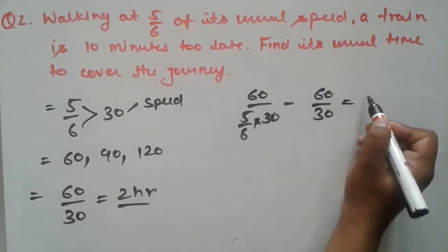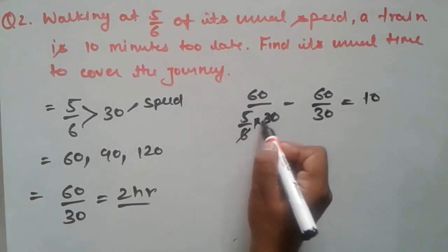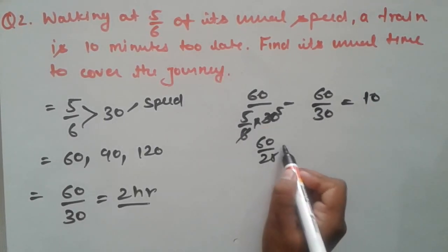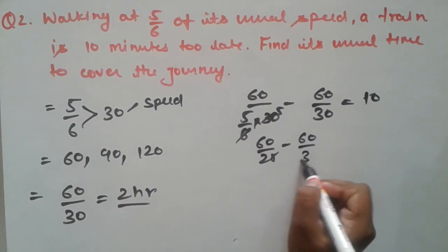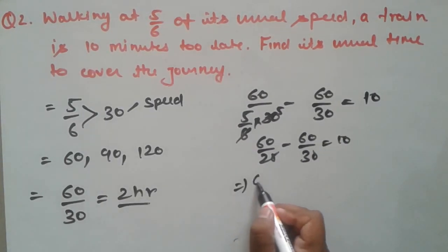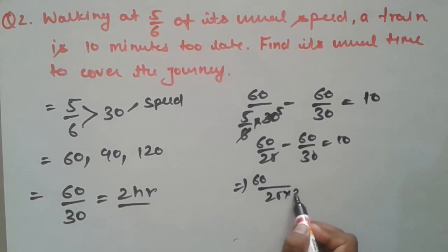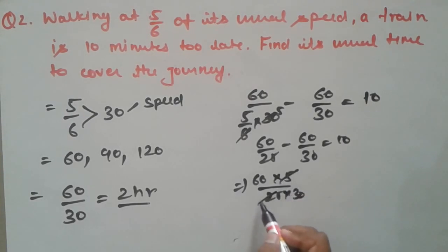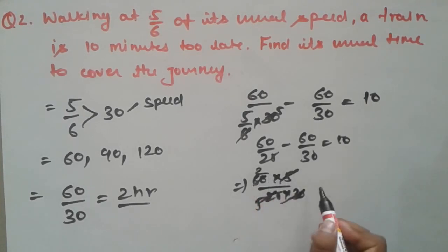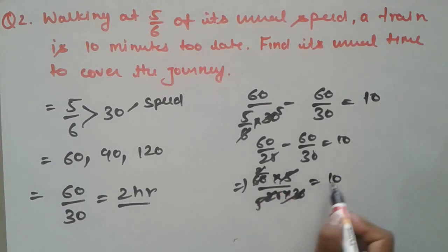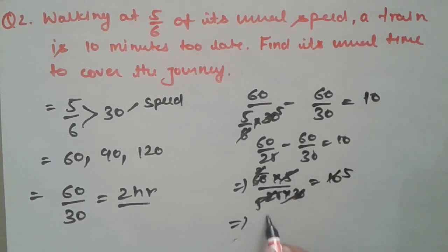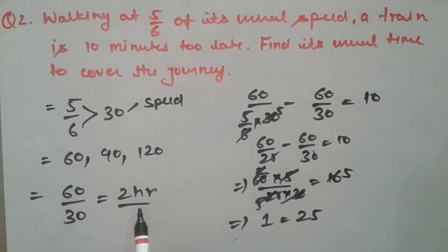So 60/25 − 60/30 = 10 minutes. Taking LCM of 25 and 30: (60 × 30 − 60 × 25)/(25 × 30) = 10. This gives 60 × 5/750 = 10, so 300/750 = 2/5 = 10 minutes. The value of 1 unit equals 25 minutes. The usual time taken is 2 hours (our assumption), so the value of 2 units is 50 minutes. So 50 minutes is the final answer.